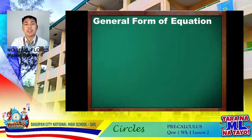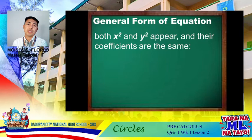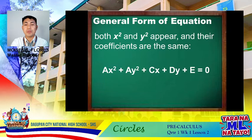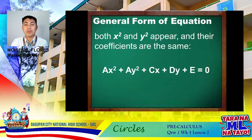We are now done with the standard form. This time, we move on to the general form of the equation of a circle. Bear in mind from our introduction to conics: in the general form, the variables x and y are in the second degree and their coefficients are the same. The general form is: ax² + ay² + cx + dy + e = 0.